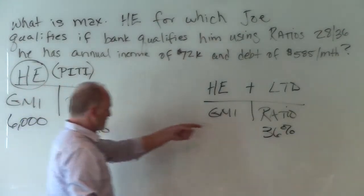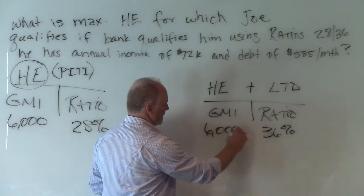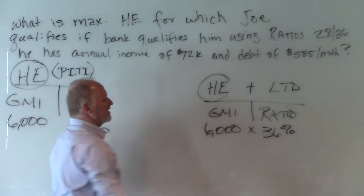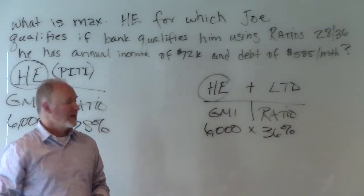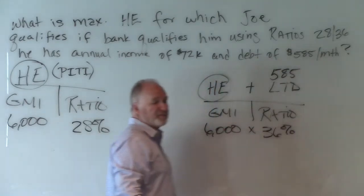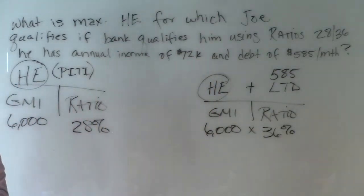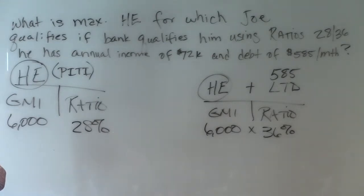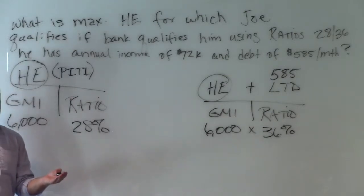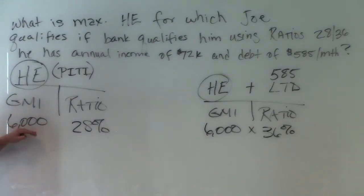If it's $6,000 up here, it's $6,000 down here. We're looking for housing expense down here. And what's the other variable that we have? $585. Now, if I'm looking for housing expense and I multiply the bottom numbers — GMI times ratio — it will give me the housing expense.